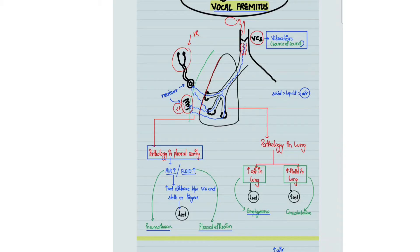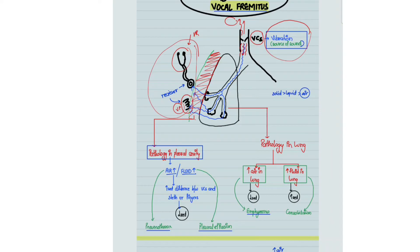To understand the interpretation, we first look at the pleural cavity. Whenever there is accumulation of air or fluid in the pleural cavity, the distance between the source of sound and the receiver increases, because something now occupies the space between the lung and the chest wall. So whether air or fluid accumulates in the pleural cavity, in both cases vocal fremitus and vocal resonance will be decreased, as the source of sound has moved away from the receiver.